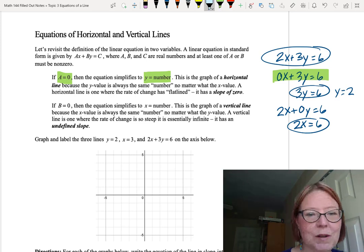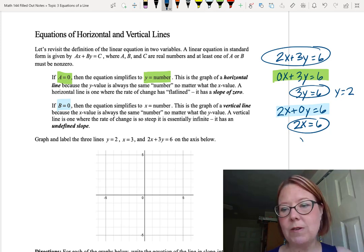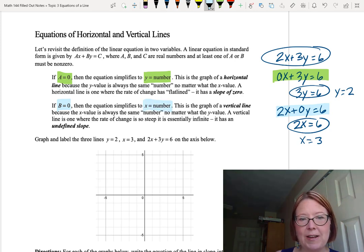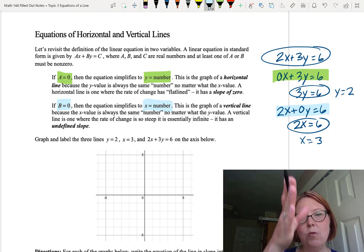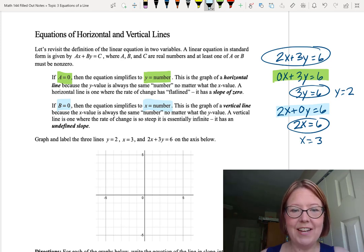In the opposite edge case, where b equals 0, like our case 2x plus 0y equals 6. If we were to continue simplifying 2x equals 6, and then dividing both sides by 2, x equals 3, we have an equation where x equals some number. And this is the graph of a vertical line because the x value is now always the same, and that's going to make a vertical line for us. A vertical line is one where the rate of change has become so steep, it is essentially infinite. It has an undefined slope.